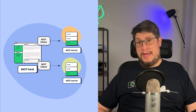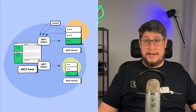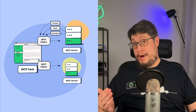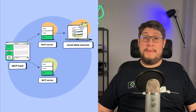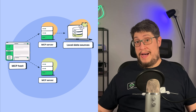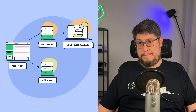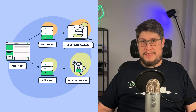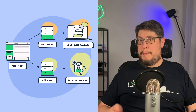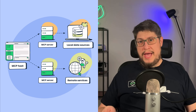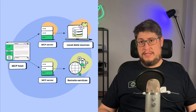The MCP servers provide clients the context, tools, and prompts we talked about earlier. A local data source can be a database, your device's files, or basically any source that MCP servers can access for context. Remote services are external systems that exist outside your local environment, typically accessed over the internet, and MCP servers can be designed to access those remote services for context.